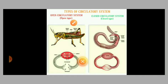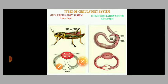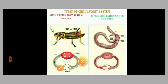First, we can see about open type. In open type, the blood is pumped by the heart into blood vessels that open into blood spaces called sinuses. These sinuses are body cavities which are called hemocoel.